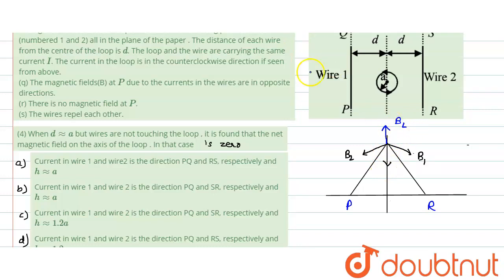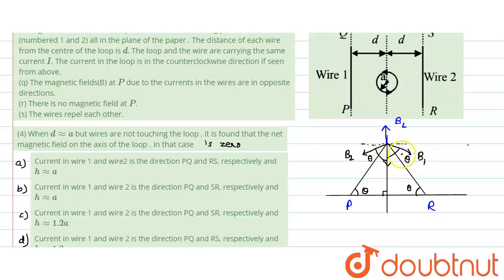Now let us represent this with an angle. Let's say this is our horizontal, and this angle is theta. If this is theta, this is 90, so this angle would be 90 minus theta, and this total angle is 90 degrees. If this is 90 minus theta then this angle would be theta. Similarly if this angle is theta it would be 90, so this angle would be 90 minus theta, making this angle also theta — because the total angle from here up to here is 90.